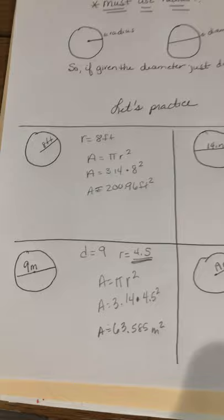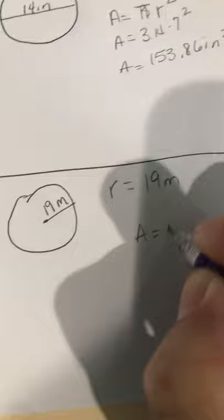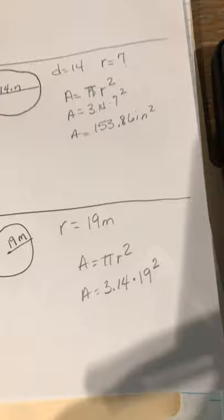All right, our last example. So if you notice they've gone ahead and given us the radius. So that's easy. No extra steps involved. So r is equal to 19 meters. So A equals pi r squared. A equals 3.14 times 19 squared. So here's our calculator.